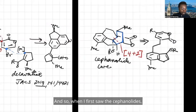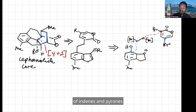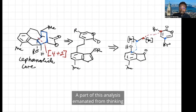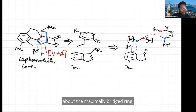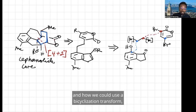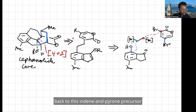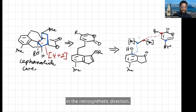And so when I first saw the speranolides, I was immediately drawn to a cycloaddition of indines and pyrones to start to build these compounds. Part of this analysis emanated from thinking about the maximally bridged ring, highlighted here in blue, in the speranolides, and how we could use a bicyclization transform in the language of Corey to simplify the structure back to this indine and pyrone precursor in the retrosynthetic direction.